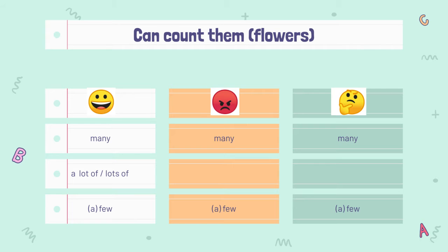You see a smiley — that's a positive sentence. In a positive sentence you use many, a lot of, lots of, and a few. In a negative sentence you use many or few. And in a question you use many and a few or few. What's on top with the cross is important: you can count them, like flowers. If you can count them, you say many flowers, a lot of flowers, a few flowers, or few flowers.